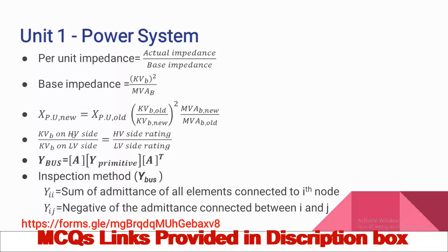This is the voltage ratio formula to find out the new base voltages. If one side's base voltage is known, the other side's base voltage can be calculated for the transformer using this formula: kV on HV side divided by kV on LV side equals the HV side rating divided by LV side rating. This gives the new base value — just cross-multiply the formula.